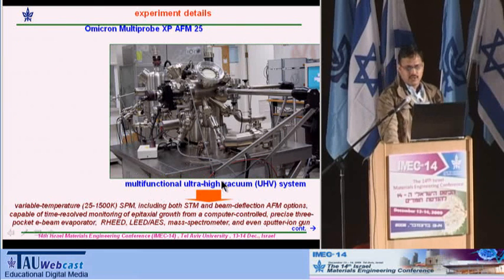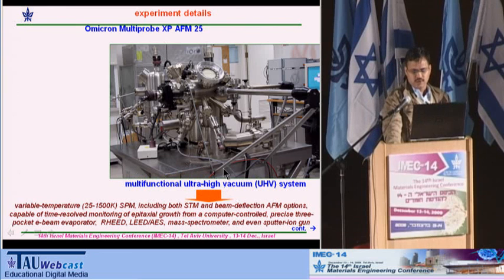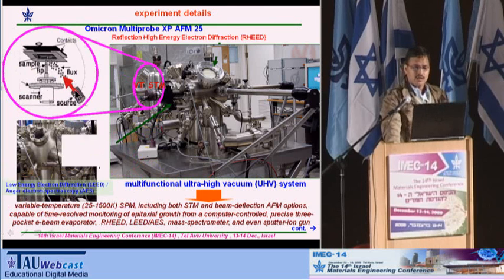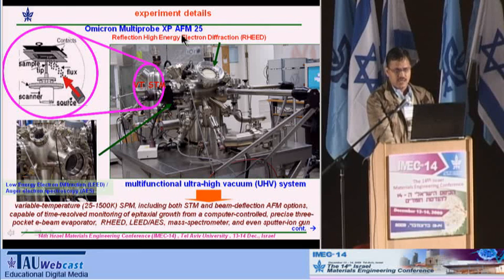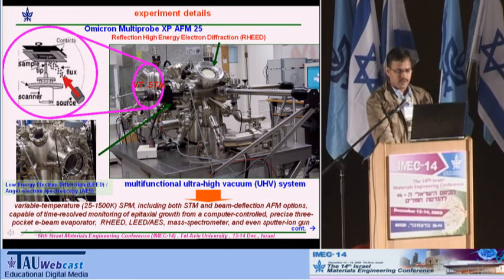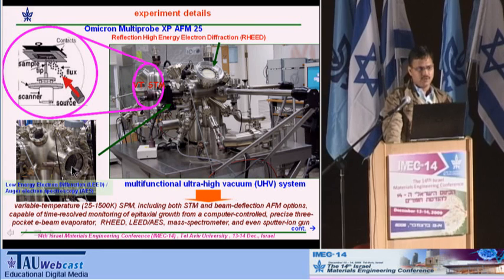This is our multifunctional ultra-high vacuum system where we did the present experiment. Its heart is a variable-temperature scanning tunneling microscope, where we can monitor real-time imaging. In addition, it has RHEED and LEED facilities, where we can monitor the diffraction pattern — essentially the changing diffraction pattern during nucleation and growth on the sample.